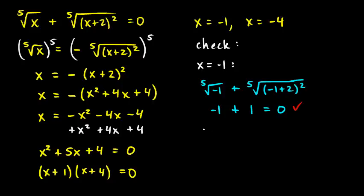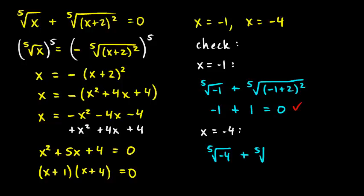Now let's check x equals negative 4. We put negative 4 in for x, giving us the fifth root of negative 4. I don't know exactly what that number is, but it is a real number — we can have a negative number under the radical with an odd index, so this is not imaginary. Then I have plus the fifth root of negative 4 plus 2 squared.